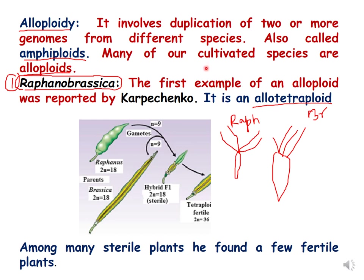Let us discuss one more example of polyploidy — the example of alloploids. Alloploids involve duplication of two or more genomes and are also called amphiploids. Many of our cultivated species are alloploids and one of the famous examples is hexaploid wheat which we eat as chapatis, breads, etc. The first example of alloploidy was reported by Karpechenko and the example is Raphanobrassica, which is a yellow tetraploid. It was made by hybridization of Raphanus sativus and Brassica oleracea.